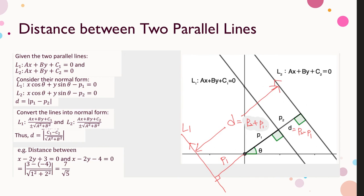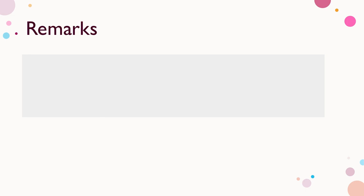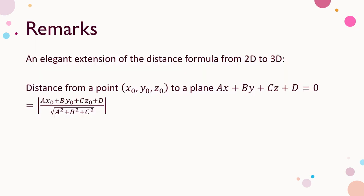Here is an example showing how the distance between two parallel lines is calculated using the formula. I hope the normal form and the distance formulas are clear to you. You can compare the work of finding the distance with and without the formulas to see how elegant they are. Another remark: the distance formula can be elegantly extended from 2D to 3D. You may derive this 3D formula on your own using vectors.